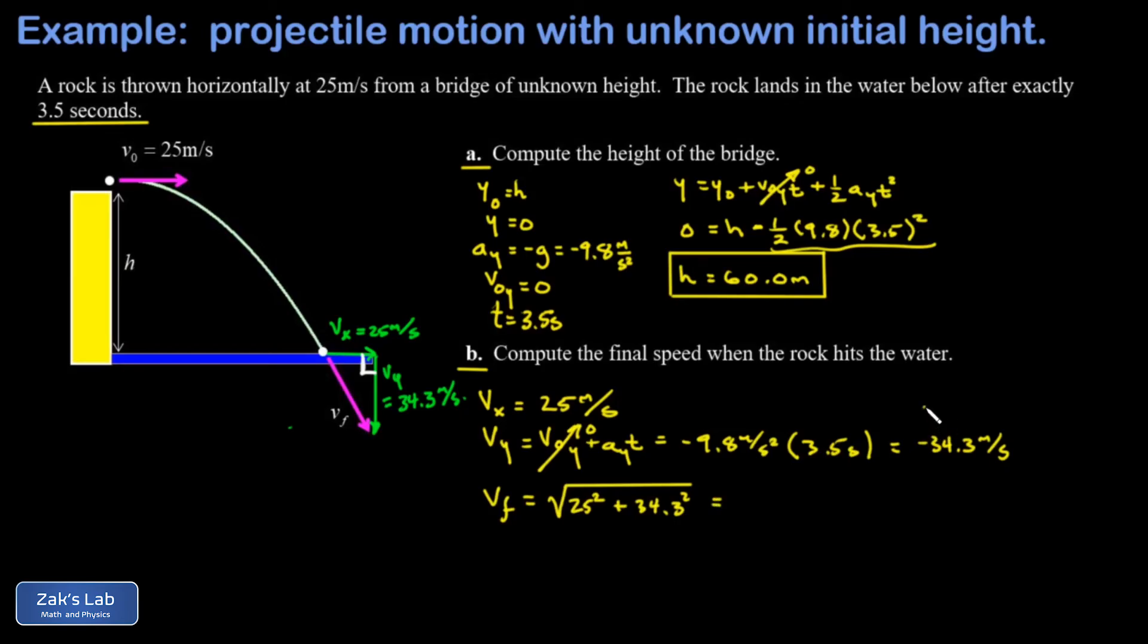Notice that the minus sign on VY doesn't matter there. We're just taking the magnitude of that side and squaring it. And when I run the numbers on this, I get 42.4 meters per second. And we're done.